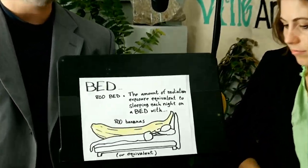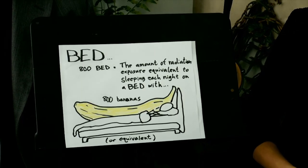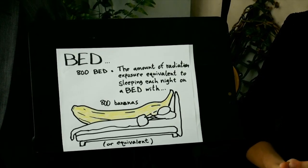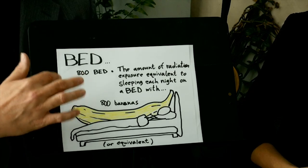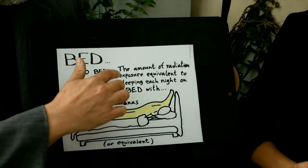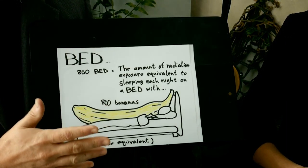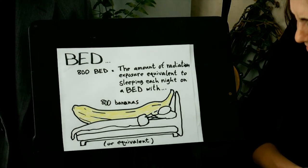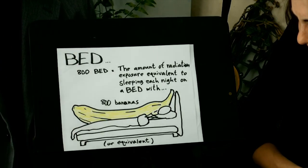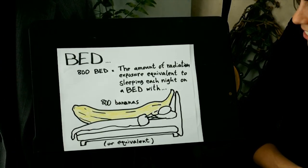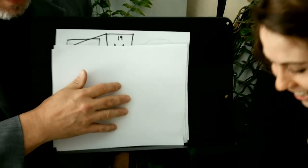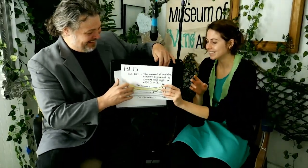So, the BED unit of measurement was changed to account for this fact, where now a BED count of 800 would be equivalent to the amount of radiation exposure equivalent to sleeping each night on a bed with 800 bananas. Is this for real? Yes, of course. Who sleeps with bananas? That doesn't make any sense. Only people who are concerned with scientific rigor and such things. Oh my goodness.